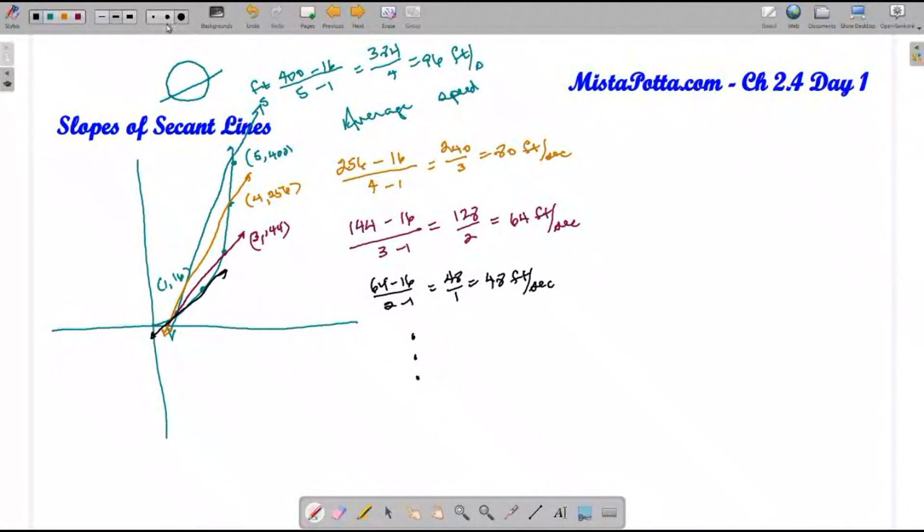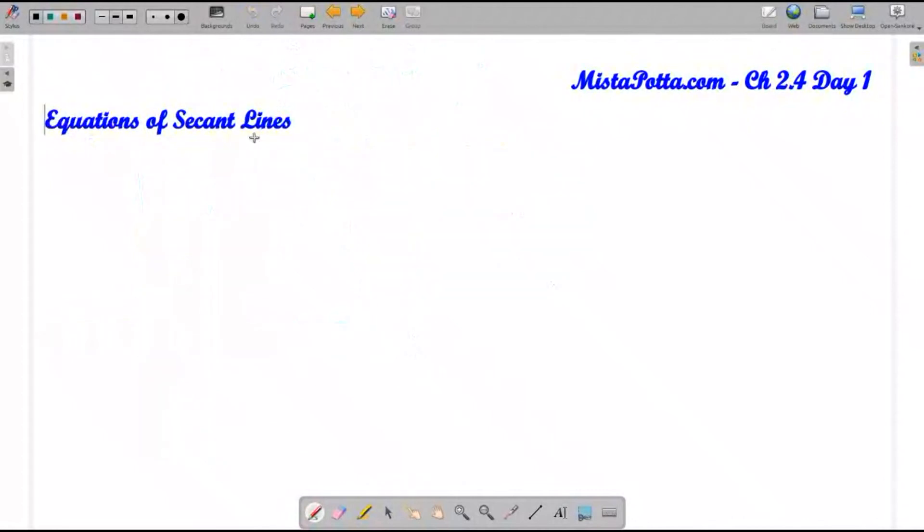My question is, what happens if I take this to its logical end? In other words, what happens if instead of a secant line, I actually end up with something that touches only at one spot, what we called in algebra a tangent line. We'll get back to that a little bit later.